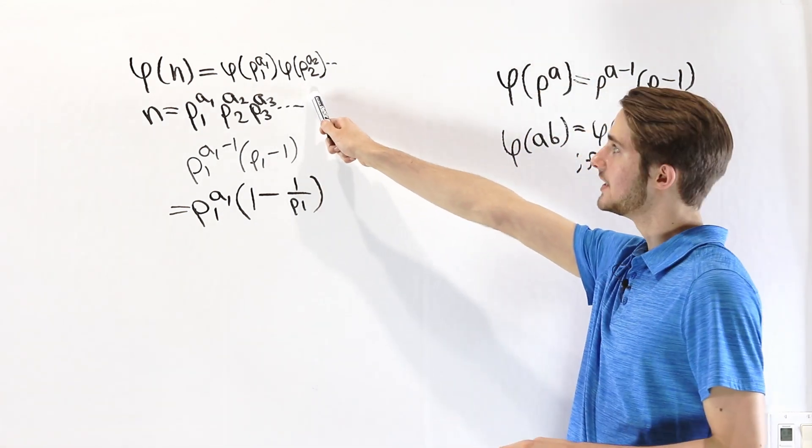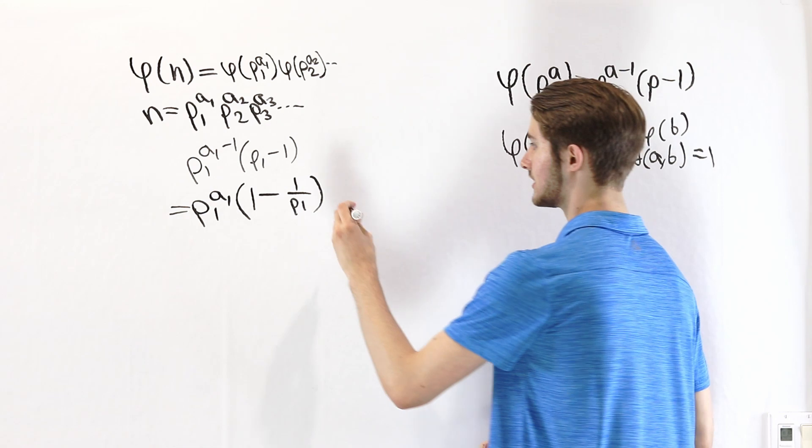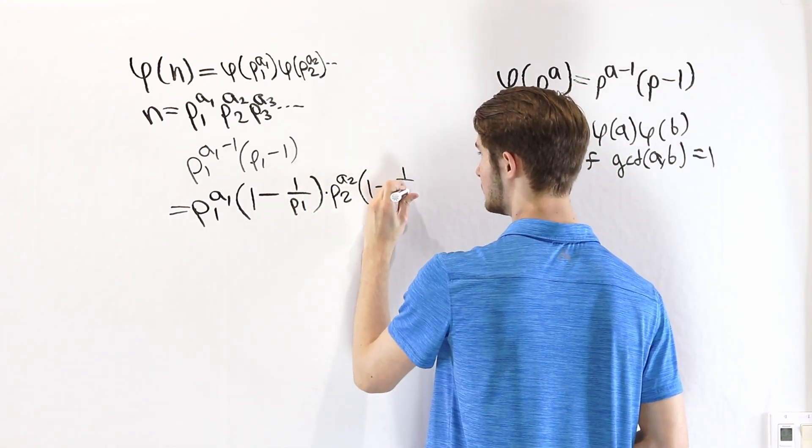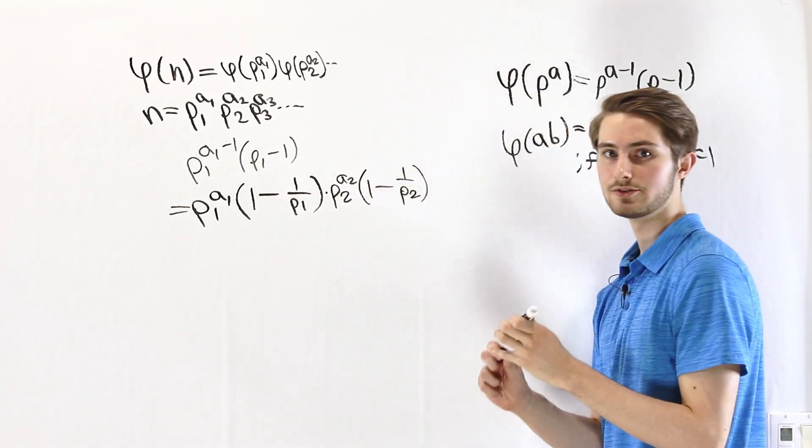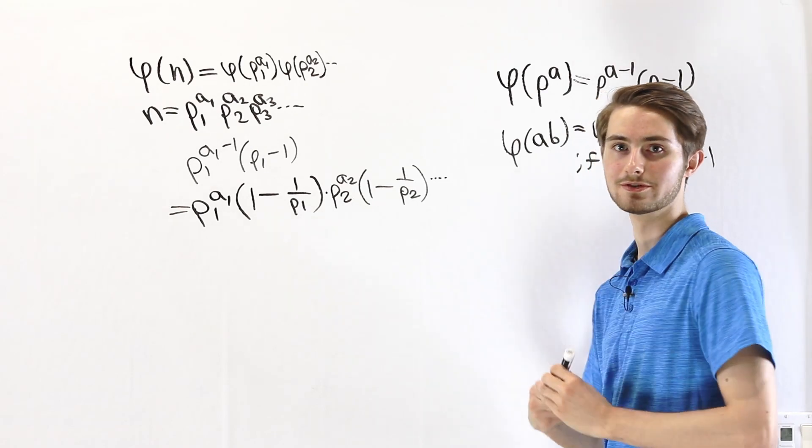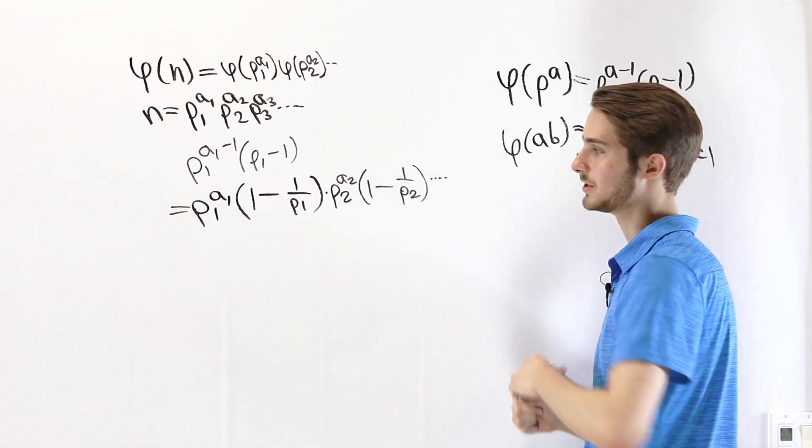If we look at p2 to the a2, it's going to be the same thing. We're going to multiply by p2 to the a2 times 1 minus 1 over p2. And if we had p3 to the a3, it would be the same thing over and over and over again for all of those prime powers.